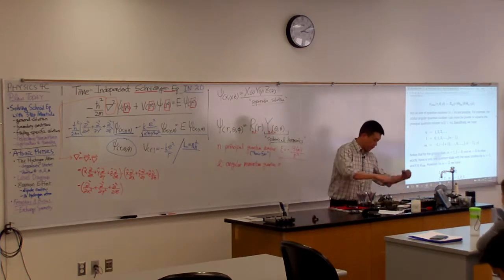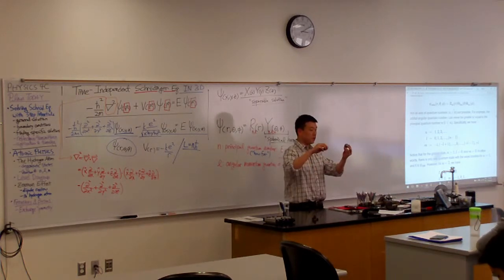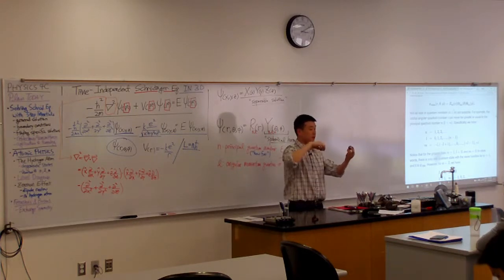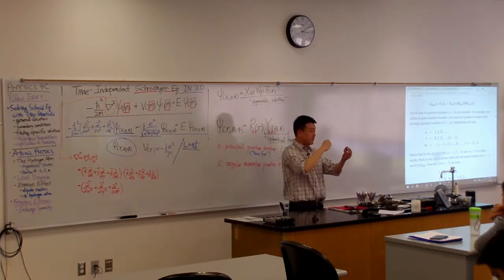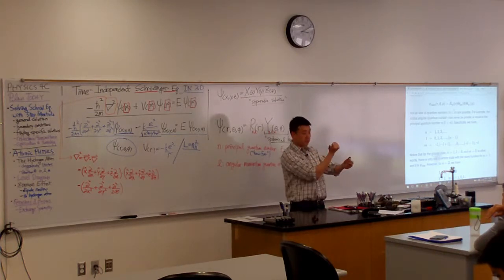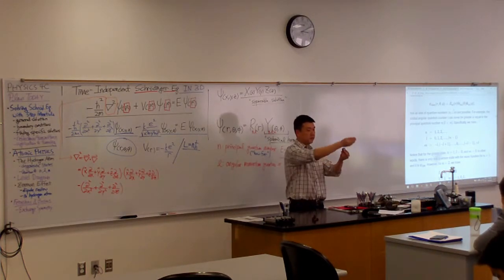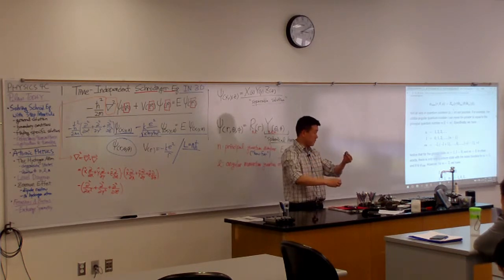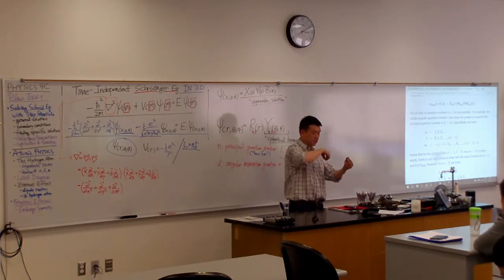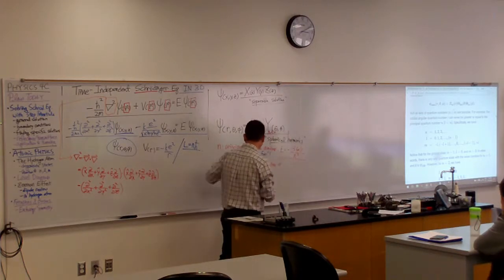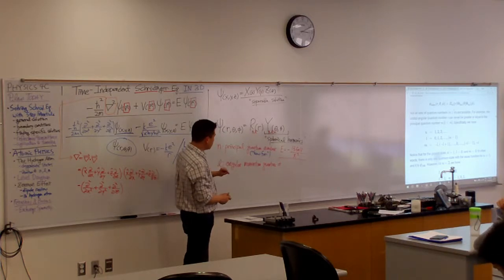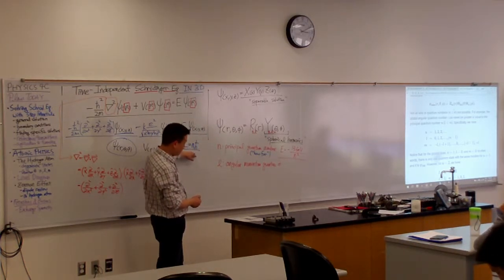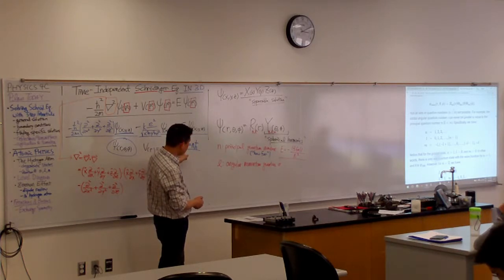This is called angular momentum quantum number because this L is associated with the magnitude of angular momentum of the electron. So imagine if you have proton and electron orbiting around like this, then it has some value of angular momentum pointing in this direction, right? Now imagine it's spinning like this. So it has different value of angular momentum pointing this way, but both this state and this state could have the same magnitude of angular momentum. So both of this state and this state would have the same L, magnitude of angular momentum.